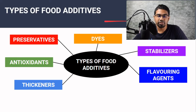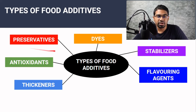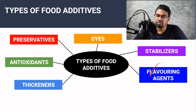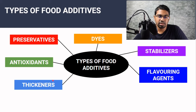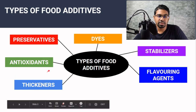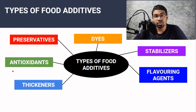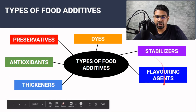There are several different types of food additives. Some of the more common ones are preservatives, dyes, stabilizers, flavoring agents, thickeners, and antioxidants. There are more as well, but these are the main ones.